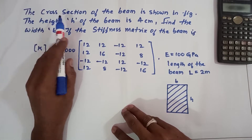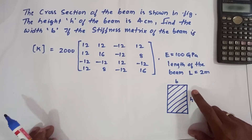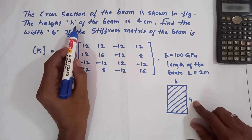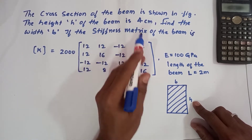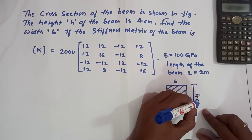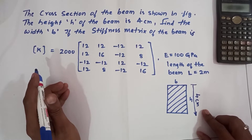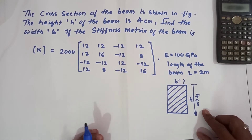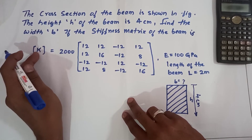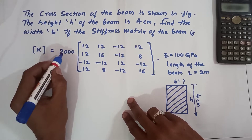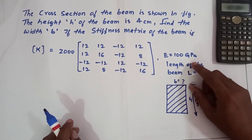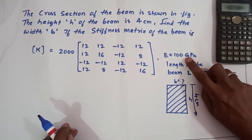Let me read the question: a cross-section of the beam is as shown in the figure. This is the cross-section of the beam having width and height. The height h of the beam is 4 centimeters — that is the total height of the beam. You need to find the width of the beam if the stiffness matrix of the beam is given, where the value of K, the stiffness matrix for the beam element, is given as 2000, and a 4×4 matrix is mentioned.